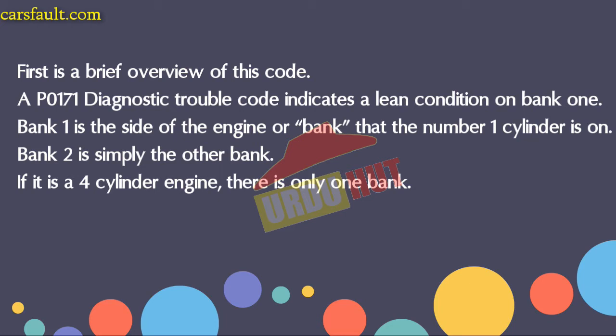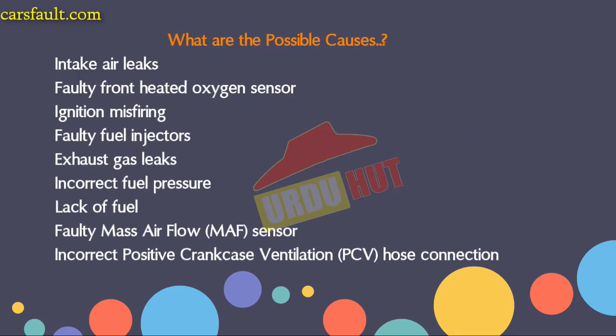P0171 indicates a lean condition on bank one. Bank one is the side of the engine where the number one cylinder is located. Bank two is simply the other bank. If it's a four-cylinder engine, there is only one bank. Now let's talk about the P0171 possible causes.